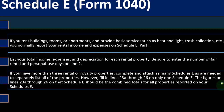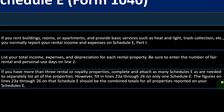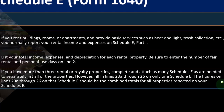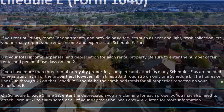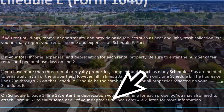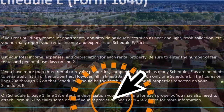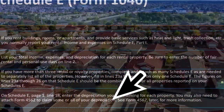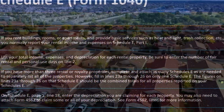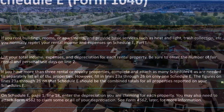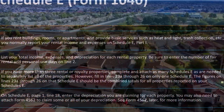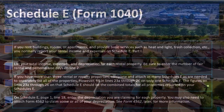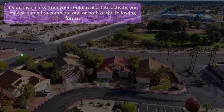The figures on lines 23A through 26 on Schedule E should be the combined totals of all properties reported on Schedule E page one, line 18, including the depreciation you are claiming for each property. You may also need to attach Form 4562 to claim some or all of your depreciation — see Form 4562 later for more information.